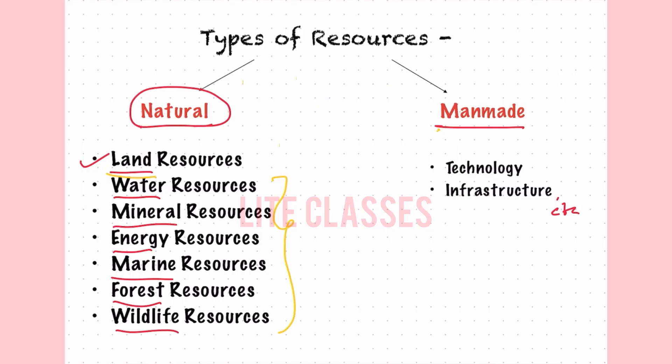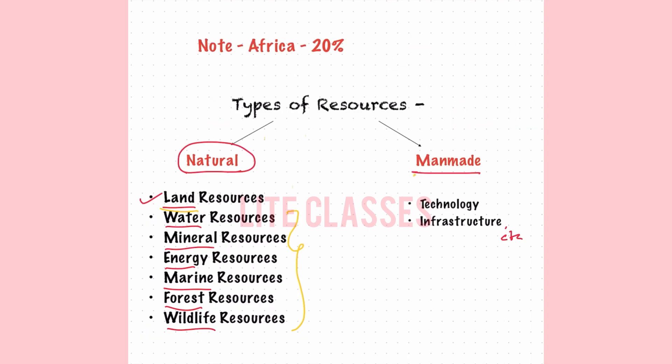While one might assume that extensive land availability automatically translates to economic prosperity, this is not always the case. Consider Africa with its rich 20% share of global land — however, it has not reached its economic potential due to lack of infrastructure, technology, and other vital man-made resources.